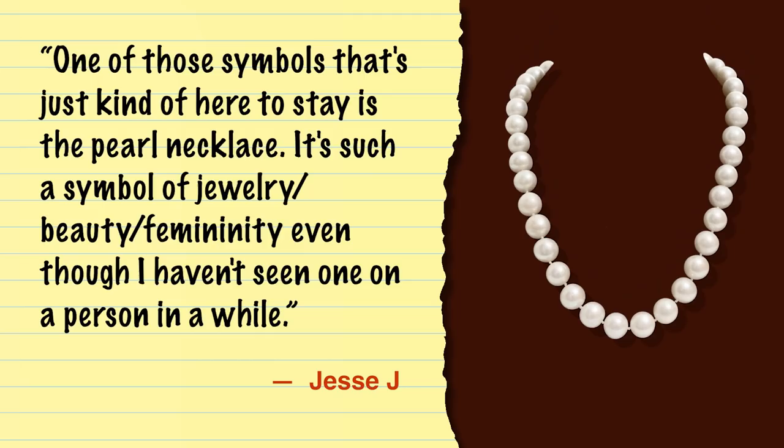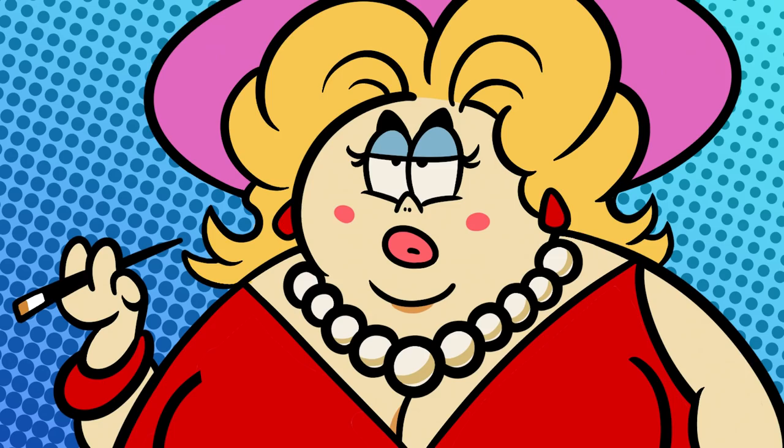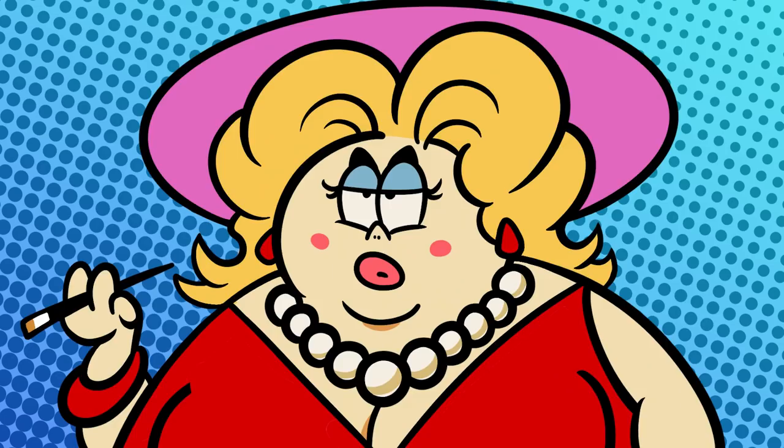Here is another good example of a romantic sentimental anachronism from my friend Jesse J, who says one of those symbols that's just kind of here to stay is the pearl necklace — such a symbol of jewelry, beauty, and femininity, even though he hasn't seen one on a person in a while. And I agree: it is very hard to imagine a cartoon of a stereotypically glamorous lady wearing anything but a pearl necklace. It's also hard to imagine her wearing anything but a dress, which brings us to one of the most ubiquitous visual anachronisms of our time: the little woman symbol on the bathroom door.